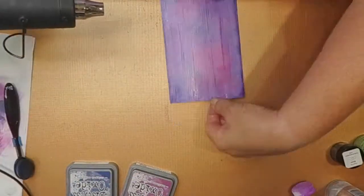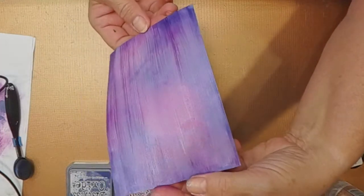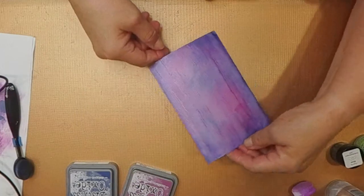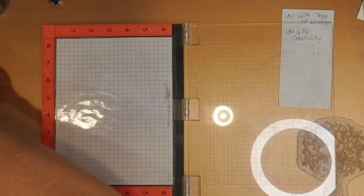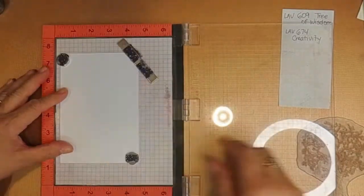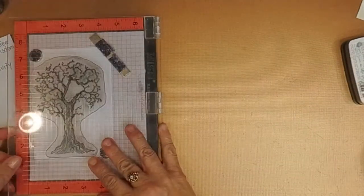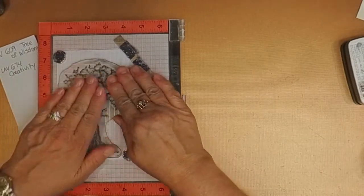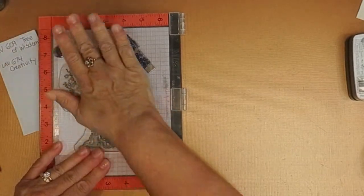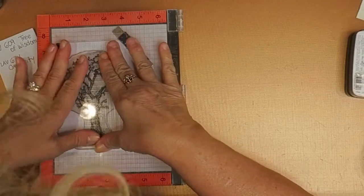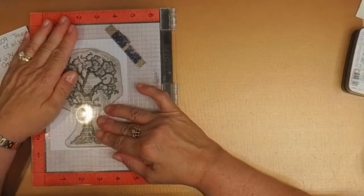It's going to be important to dry that before you try to stamp on it, so I sped it up a bit. I dried it and then even let it sit there for a few moments to make sure that it was dry. Using my MISTI, I'm going to add another sheet of four and three-eighths by six and three-eighths inch multifarious paper, and using the Versafine Clair Nocturne I'm going to stamp the tree of wisdom, which is Lavinia 609.